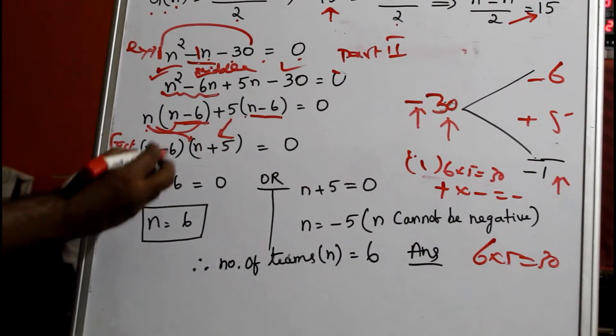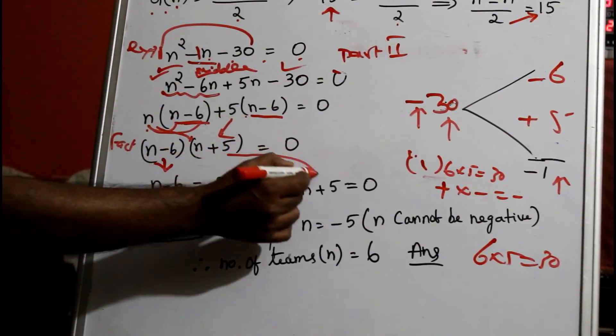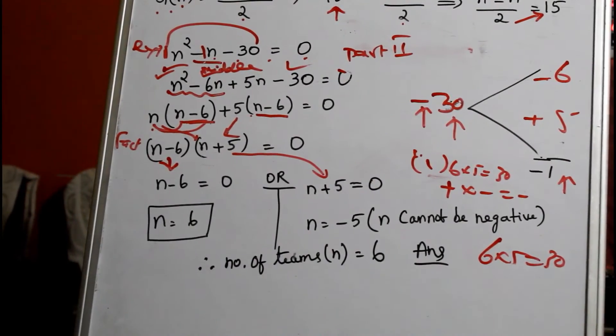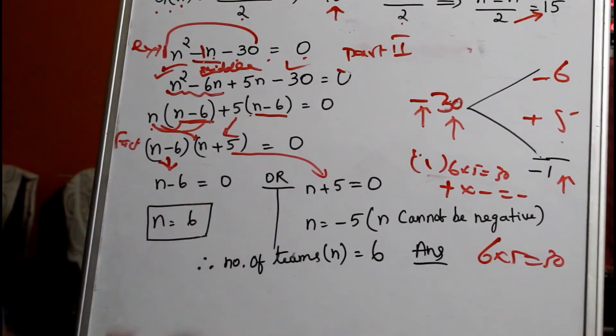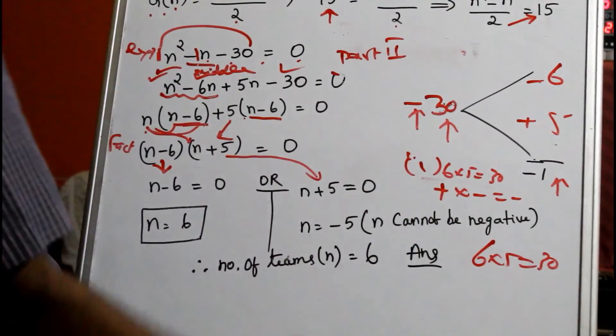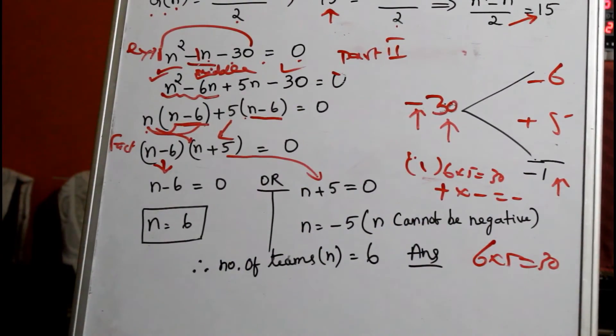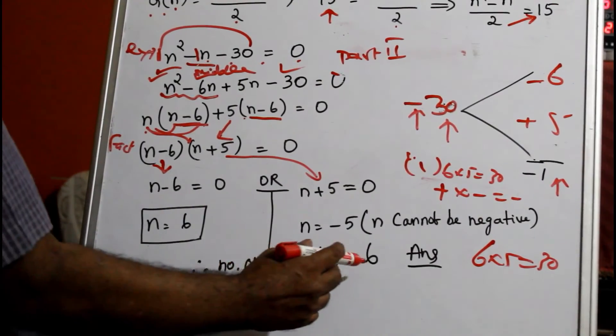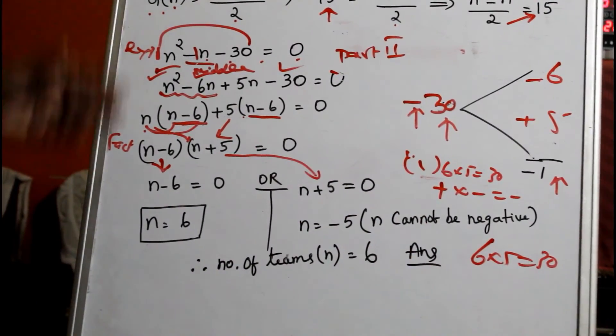n - 6 should be zero, or n + 5 should be zero. When n - 6 = 0, n = 6. Or n = -5. n cannot be negative; number of teams cannot be -5. So n should be positive. Therefore, number of teams equals 6. Hope you understood this problem.